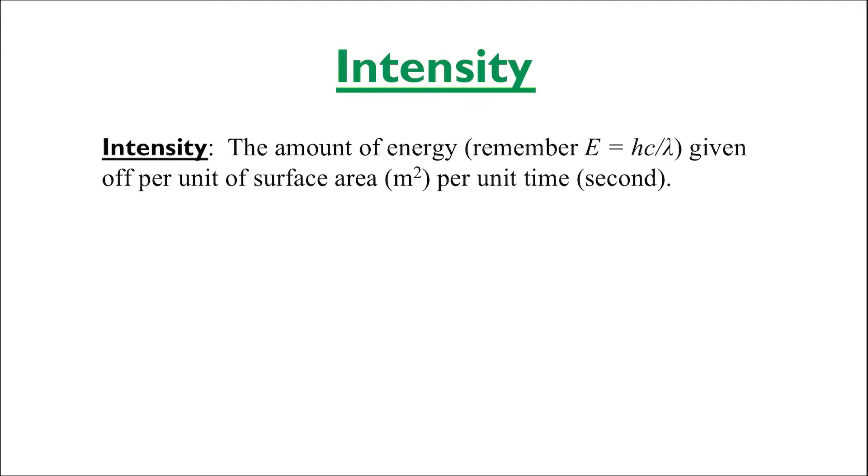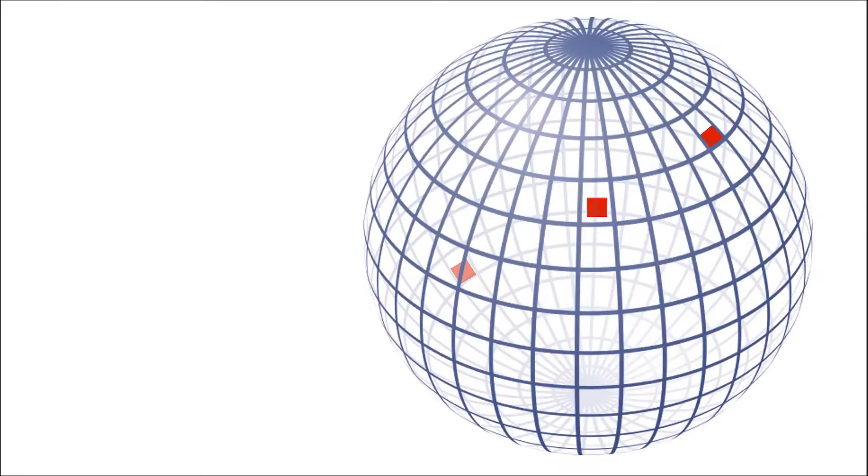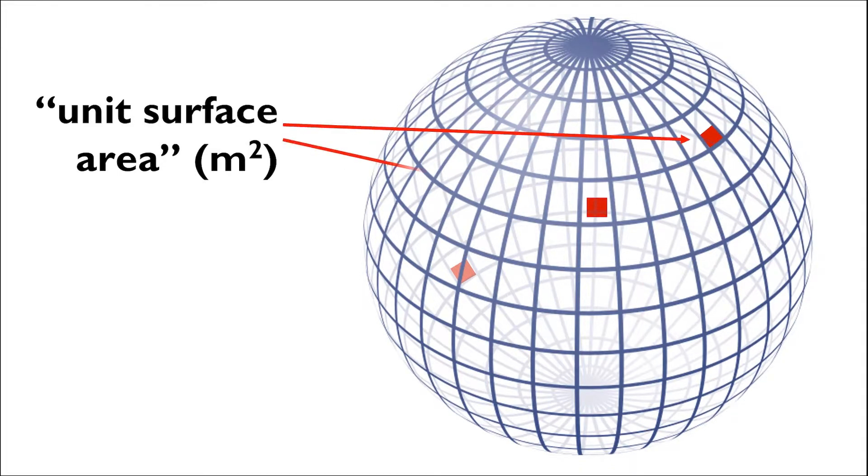Now when we say unit of surface area, we mean a small patch on the surface of the black body that measures one meter by one meter in terms of its width and height. We look at how much light is emitted from each of these tiny squares every second to determine the intensity of the light coming from that black body.